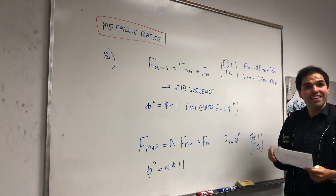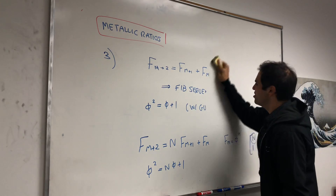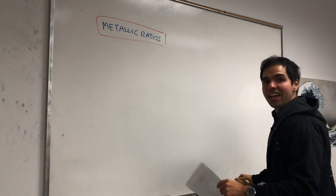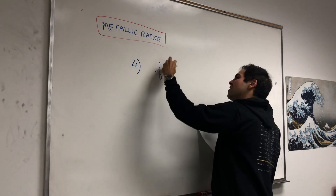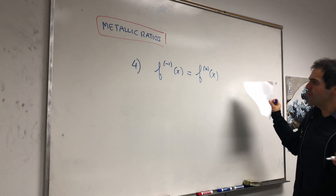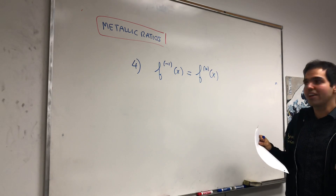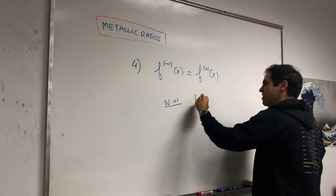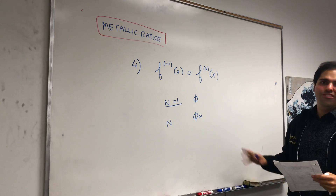That's another application of the metallic ratios. They also naturally occur when you ask: which functions have the property that f inverse of x equals the nth derivative of f? In other words, which functions satisfy the property that the nth derivative of f gives you the inverse of f? For n equals 1 we've seen it involves the golden ratio, and for general n it involves the metallic ratios — covered in another video.